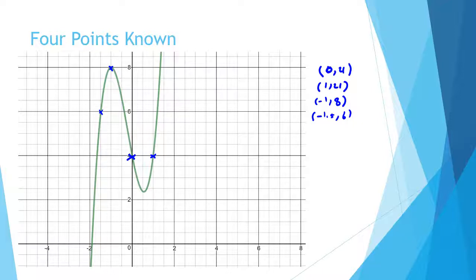We're going to use the calculator — it's exactly the same steps as before with the parabola. You go to Stats, then you enter your points: List 1 is the x-values: 0, 1, negative 1, negative 1.5; and List 2 is the y-values: 4, 4, 8, and 6.